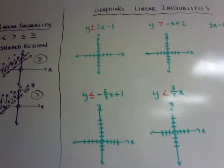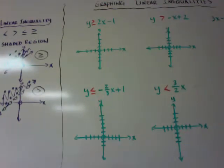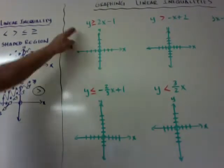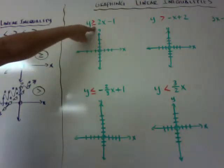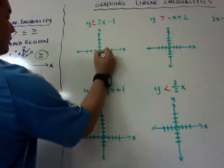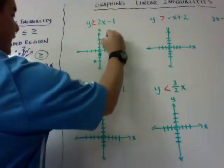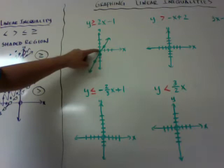Now we're going to graph some linear inequalities. The first one is y is greater than or equal to 2x minus 1. I can use slope-intercept: start at your y-intercept and use your slope. Because it's a greater than or equal to, I can use a closed dot since I'm going to have a solid line. I start at negative 1. The book shows a way where you take a test point that is not on the line — I could use (0, 0) if it's not on the line.